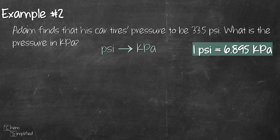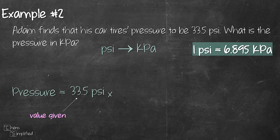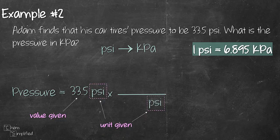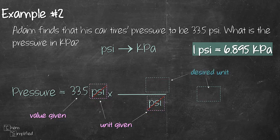So let's start by writing out what we need to find which is pressure and the value that is given which is 33.5. The unit is PSI. Then we multiply and draw a line across. We place PSI at the bottom because that's the unit we need to get rid of. Now the PSI will cancel off each other. Then we place the unit that we want which is kPa on the top.